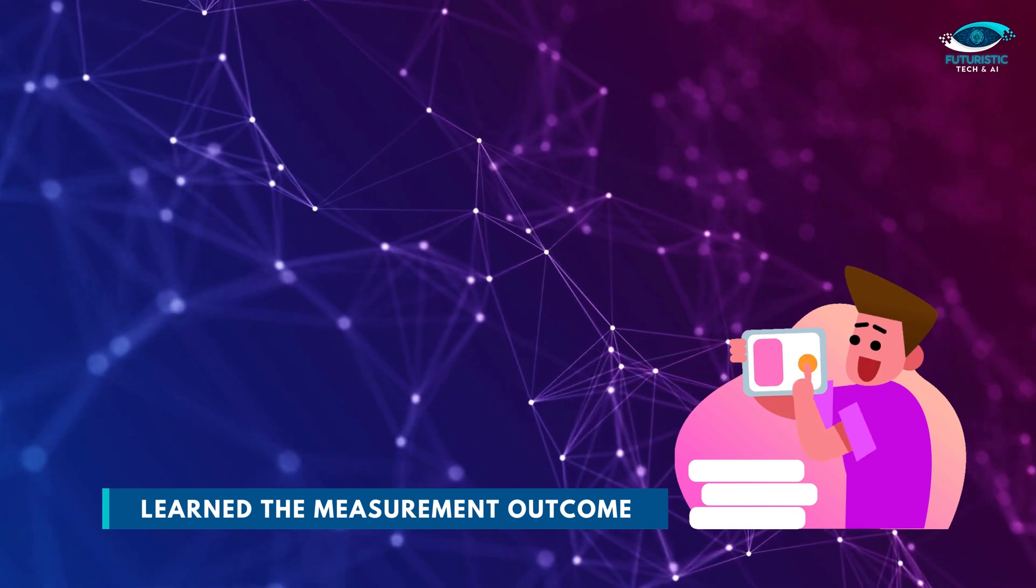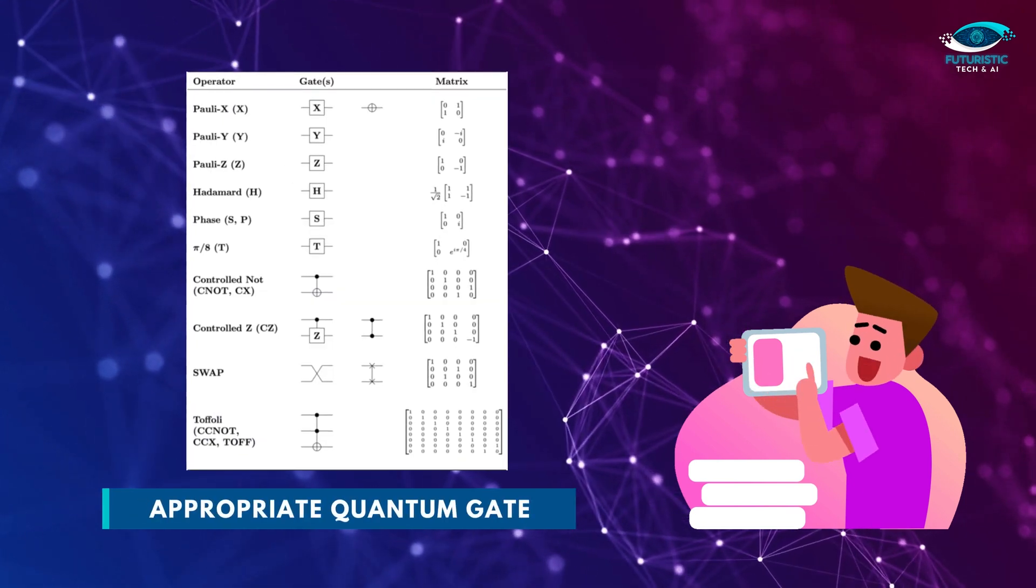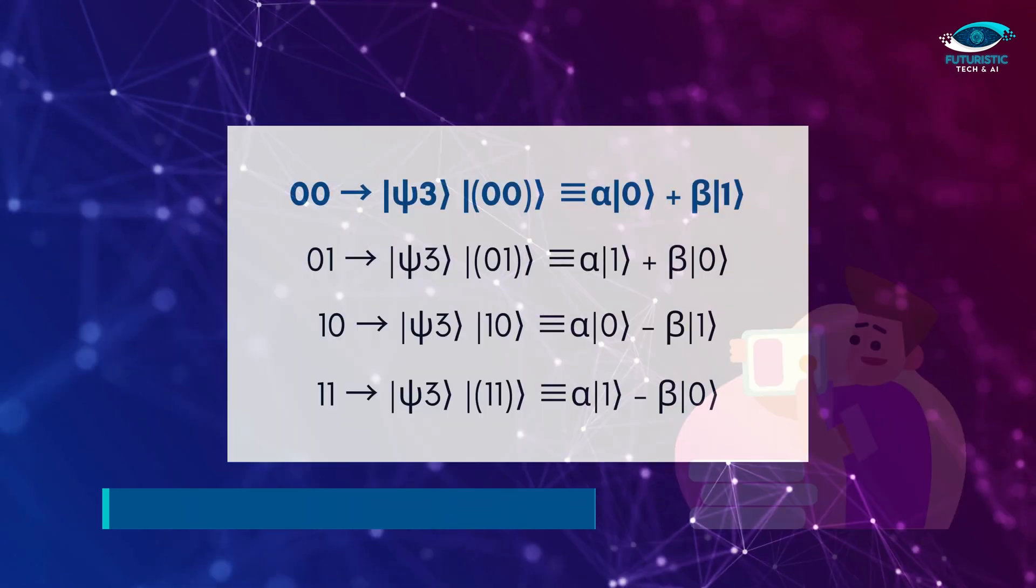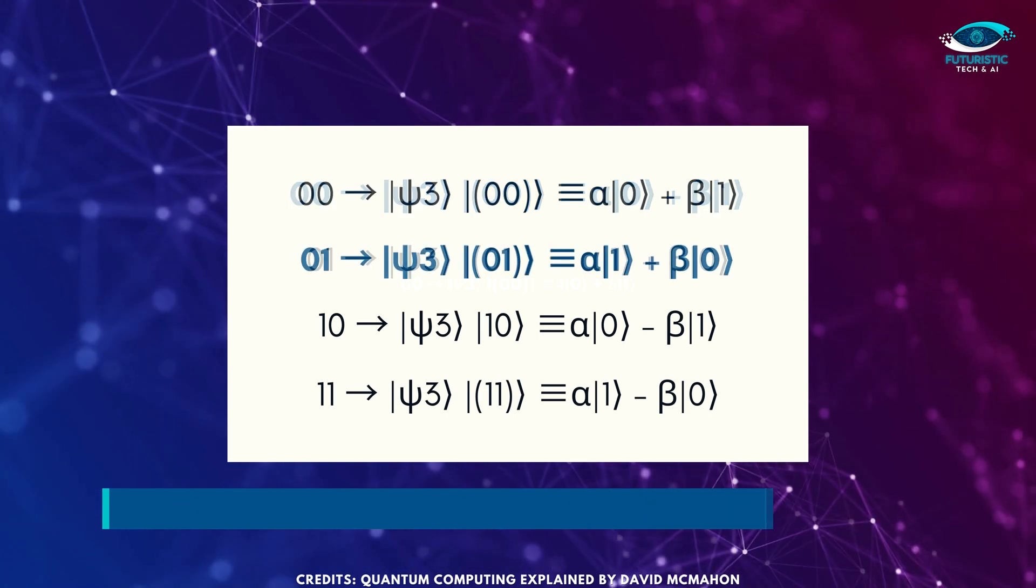Once Bob has learned the measurement outcome, Bob can fix up his state, recovering psi by applying the appropriate quantum gate. For example, in the case where the measurement yields zero, zero, Bob doesn't need to do anything.